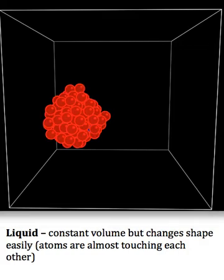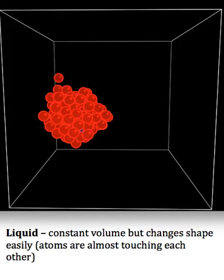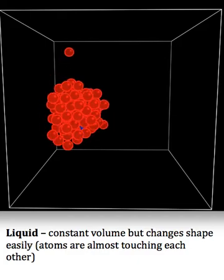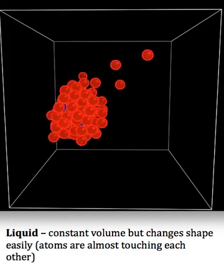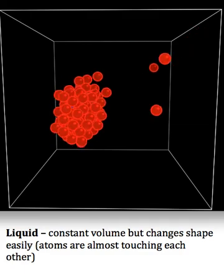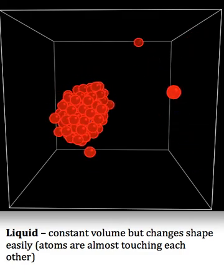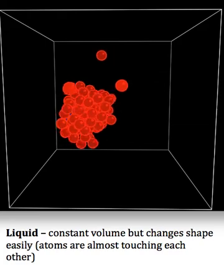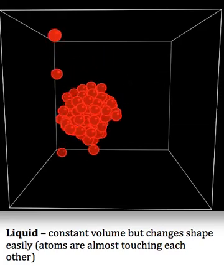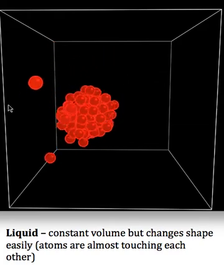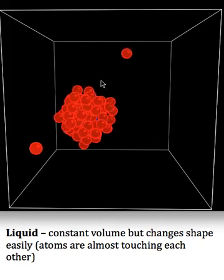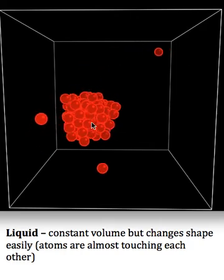I can add more energy. Atoms move around faster. And you see every once in a while an atom flies off. In fact, I might be getting close to the phase transition because more than just one atom has flown off. I have a little bit of gas in this container along with the liquid.